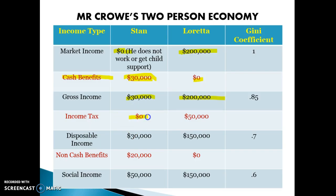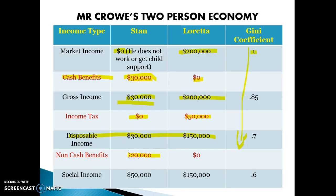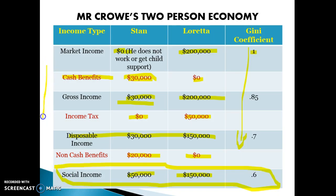Stan pays barely any income tax — let's say none for this example — while Loretta pays $50,000 in income tax because she earns a lot. So disposable income becomes more equitable and the Gini coefficient goes down. Then with non-cash benefits, Stan receives public education for his kids and lives in public housing, so his social wage income becomes $50,000. Loretta receives nothing, so her social wage income is $150,000. The Gini coefficient moves closer to zero and the distribution of income becomes more and more equitable.